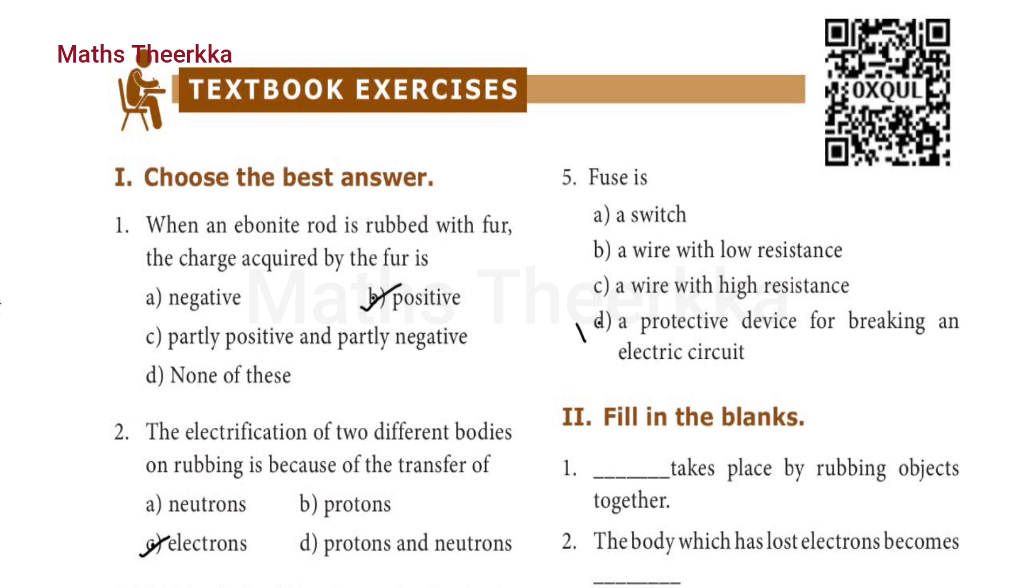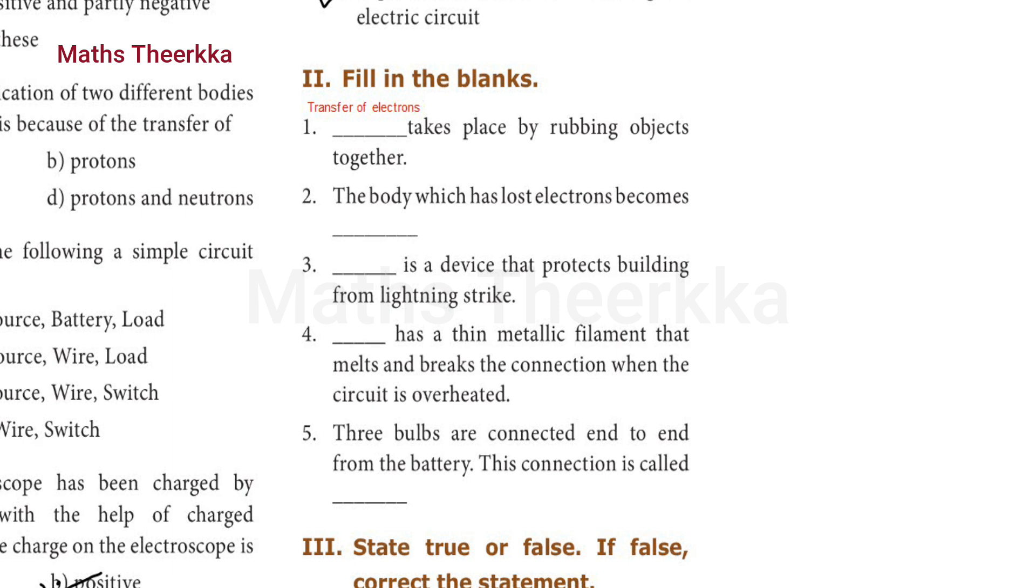Second roman: fill in the blanks. First one: blank takes place by rubbing objects together. Answer: transfer of electrons. Second one: the body which has lost electrons becomes positive.